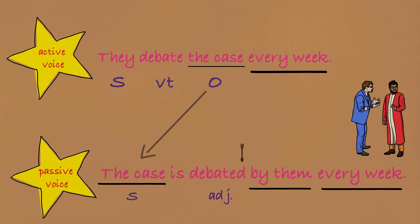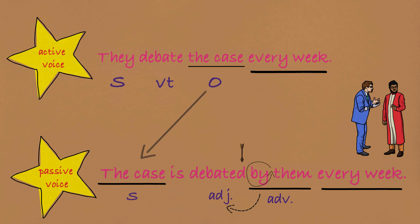So the case is debated. 所以这个 case 是被辩论的，每周被辩论的。那这个 by 介词是来修饰 debate 的副词，被他们在每周辩论的。所以当你从这样子的句子换到这个句子，就是所谓的被动语态。The case is debated by them every week.